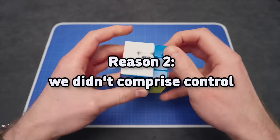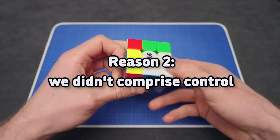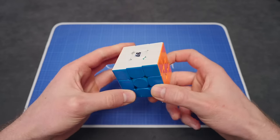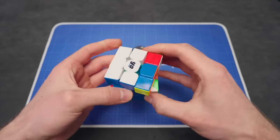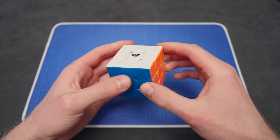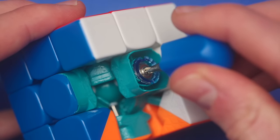And that's why we come to number two, because we didn't sacrifice control. How are we able to do that? Now you would think for a cube that's that fast out of the box, you want to tension the cube even more, make it more stable. But in fact, for this release, we made the cube looser than out of the box.